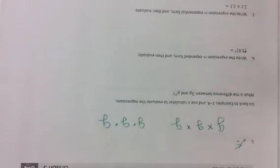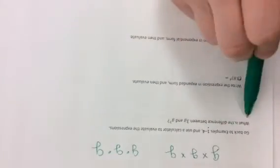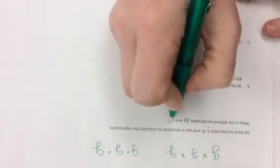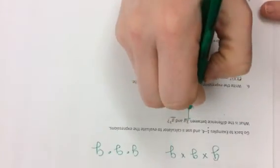Now go back to examples 1 through 4 and use a calculator to evaluate the expressions — I don't think I need to do that for you. Next, we're going to look at these exercises: what's the difference between 3g and g to the third? They're not asking for a mathematical difference but a conceptual one — what would 3g be as an addition expression?